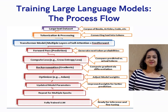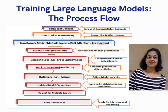Step 8 — Updated Model Parameters: the model's weights are updated after each optimization step. Step 9 — Iteration: the entire process — forward pass, loss computation, backpropagation, and optimization — is repeated over multiple passes (epochs) through the dataset, allowing the model to learn progressively and converge to an optimal state.